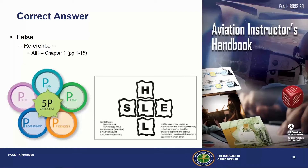The FAA recommends the 5P checklist — run through it five times from pre-flight planning through post-flight: pilot, plan, plane, programming, and passengers. Also related is the SHELL model. Even flying single pilot, you rely on other people — liveware — such as air traffic controllers, other pilots, tow pilots, ground crew, or flight service. It's not just what's in your cockpit.